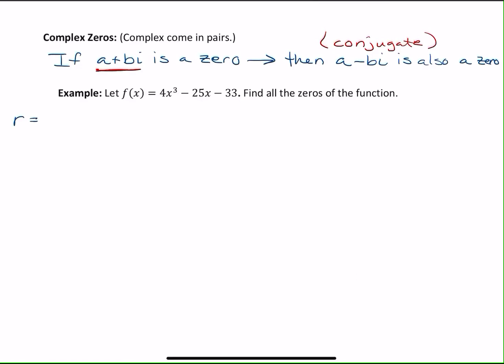Start with the rational roots test to find all your possibilities. The factors of p over q, so we're going to have 33 over 4. The factors of 33 are 1 and 33 and 3 and 11. And the factors of 4 are 1 and 4 and 2 and 2. So all our possibilities will be plus or minus 1, 3, 11, 33. Move over to the 2, so I've got 1 half, 3 halves, 11 halves, and 33 halves. And then using the 4, I'm going to have 1 fourths, 11 fourths, and 33 fourths. So those are all my possibilities.